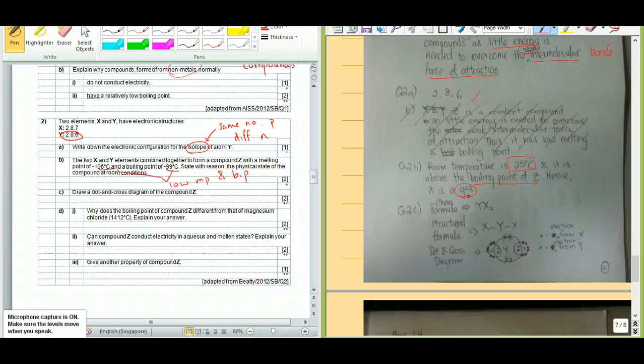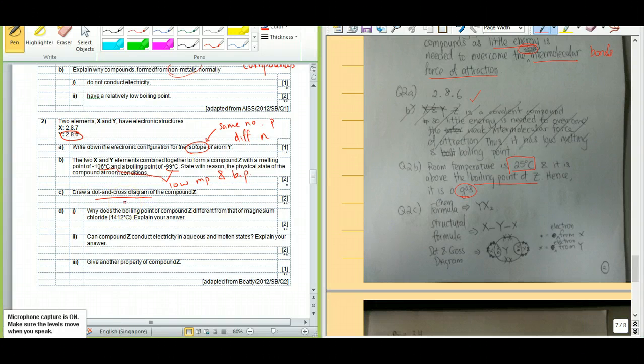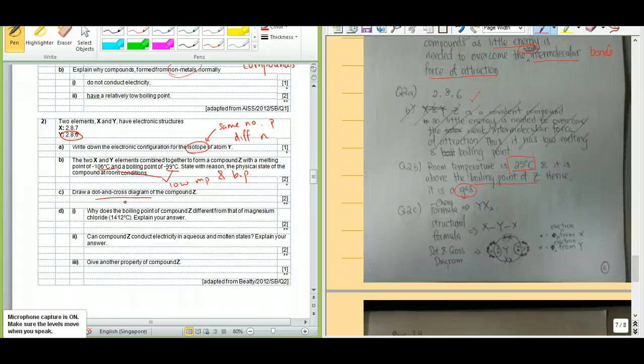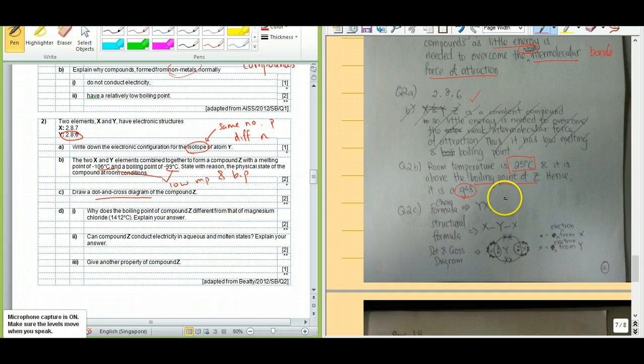For 2c here, they tell us draw the dot and cross diagram for the compound Z. First up, identify. You know that X and Y is already a covalent compound. So that's the first up. You know that you will need to draw a square bracket, will need to draw ionic volume. Secondly, if you draw covalent compounds, you need to find out what is the chemical formula.